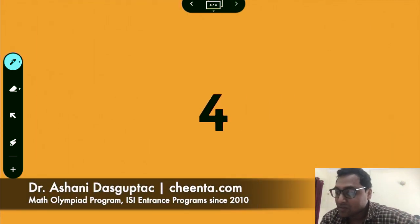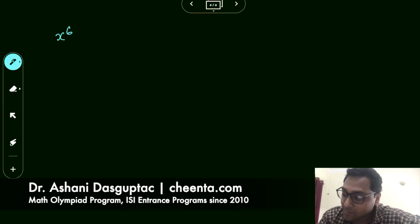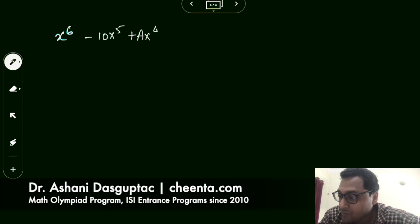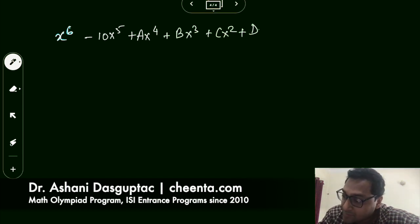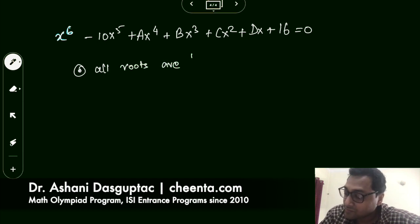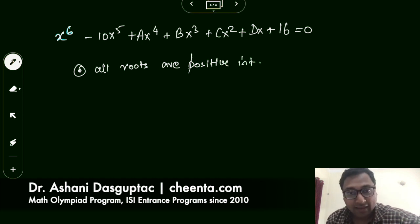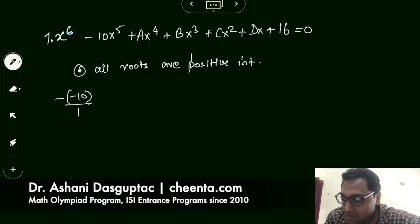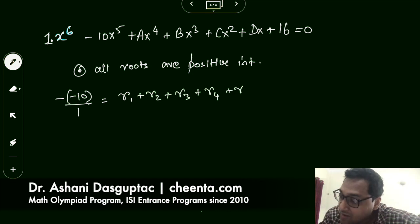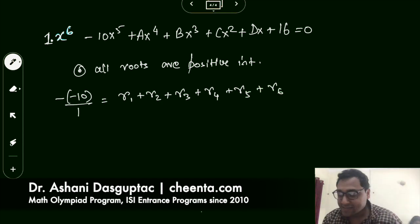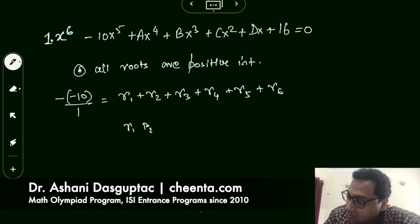Now that we understand Vieta's formula, let's get back to the problem: x to the power 6 minus 10x to the power 5 plus ax to the power 4 plus bx cubed plus cx squared plus dx plus 16 equals zero, where all roots are positive integers. Using Vieta's formula, the sum of roots R1 through R6 equals negative of (negative 10) divided by 1, which is 10. The product of roots R1 through R6 equals 16 divided by 1, which is 16.